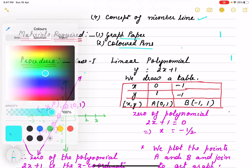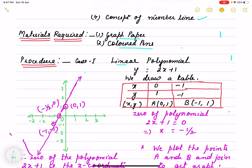What is the procedure? First, we are going to discuss about the linear polynomial. I have taken here y equals 2x plus 1. So, as we draw the graph, we first draw a table for different values of x to find out corresponding values of y.